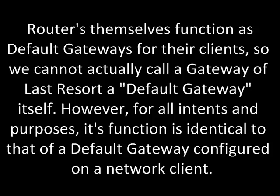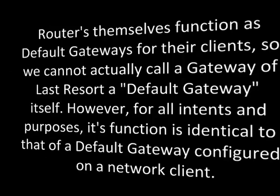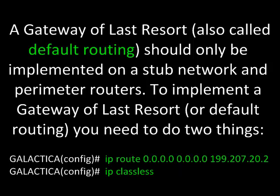However, for all intents and purposes, its function is identical to that of a default gateway configured on a network client. A gateway of last resort, also called default routing, should only be implemented on sub-network and perimeter routers.